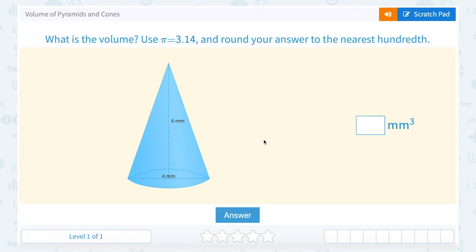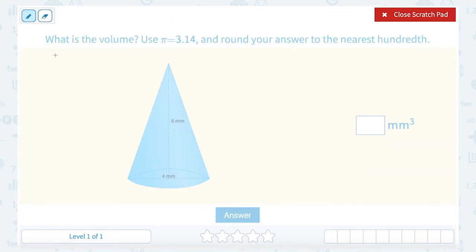We are going to be taking a look at the volume of pyramids and cones. What is the volume? Use pi equals 3.14 and round your answer to the nearest hundredth. Okay, well, the first thing we need to do is identify our shape. I can see that my shape here is a cone.